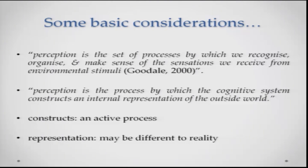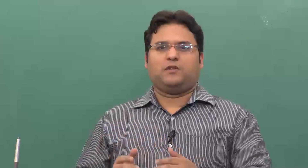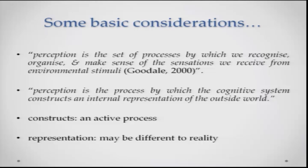If you notice, this definition makes a case for a difference between perception and sensation. Perception is what we are actually doing to sensation — what is happening to whatever sensory input we are getting from the different senses. Another definition of perception says that perception is the process by which the cognitive system constructs an internal representation of the outside world. There is a lot of information that your senses receive from the outside world, and to interact with or use that information you have to create a replica or representation of that information inside your head. Perception is the process that helps you do so.